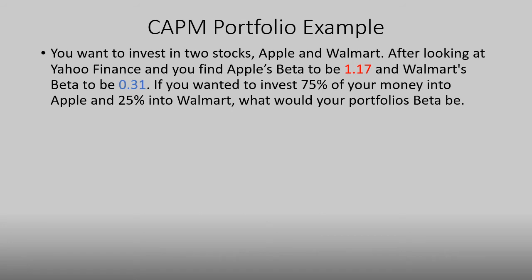Beta can also be used to look at a portfolio of investments. Let's say you hold two investments: Apple and Walmart. After looking at Yahoo Finance, you find that Apple's beta is 1.17 and Walmart's beta is 0.31. If you want to invest 75% of your money into Apple and 25% into Walmart, what would your portfolio's beta be?